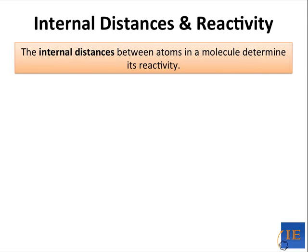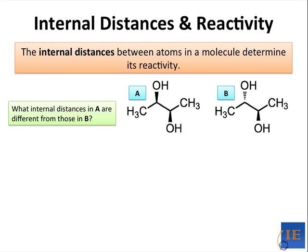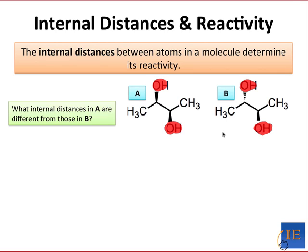The shapes of molecules determine their reactivity, and more specifically, it's the internal distances — the distances between atoms in a molecule — that determine its reactivity. What you should notice in A and B is that the hydroxyl groups in A are much closer together, at least in this conformation, than they are in B, where one is going away and one is coming towards you. This difference in internal distance between the two oxygens has a distinct, observable effect on chemical reactivity.